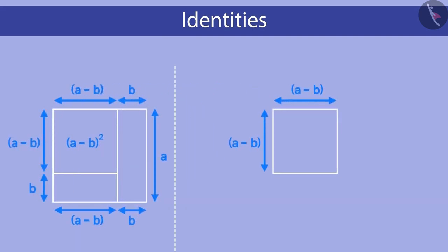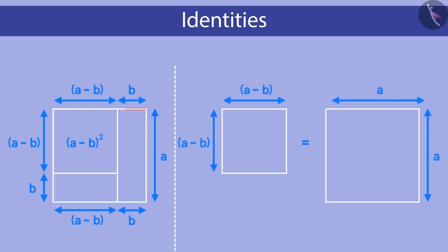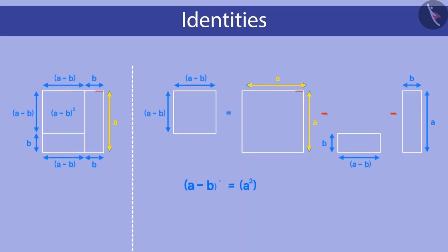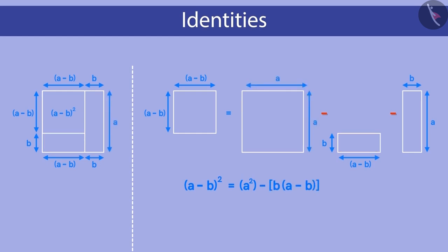Observe that the area of the smaller square equals the area of the large square minus the area of this rectangle minus the area of this rectangle. The area of the larger square is a². The area of one rectangle is b multiplied by a minus b, and the area of the other rectangle is a multiplied by b. Removing the bracket, the right-hand side becomes a² minus ba plus b² minus ab.